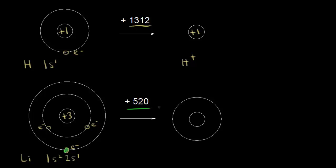If you apply 520 kilojoules per mole of energy, you can pull away that outer electron. You'd be left with a plus three charge in the nucleus and still have the electrons in the 1s orbital, but you've taken away that outer electron. You'd have a lithium cation, Li plus one, because you have three positive charges and only two electrons — three minus two gives you plus one. The electron configuration for the lithium cation would be 1s2.